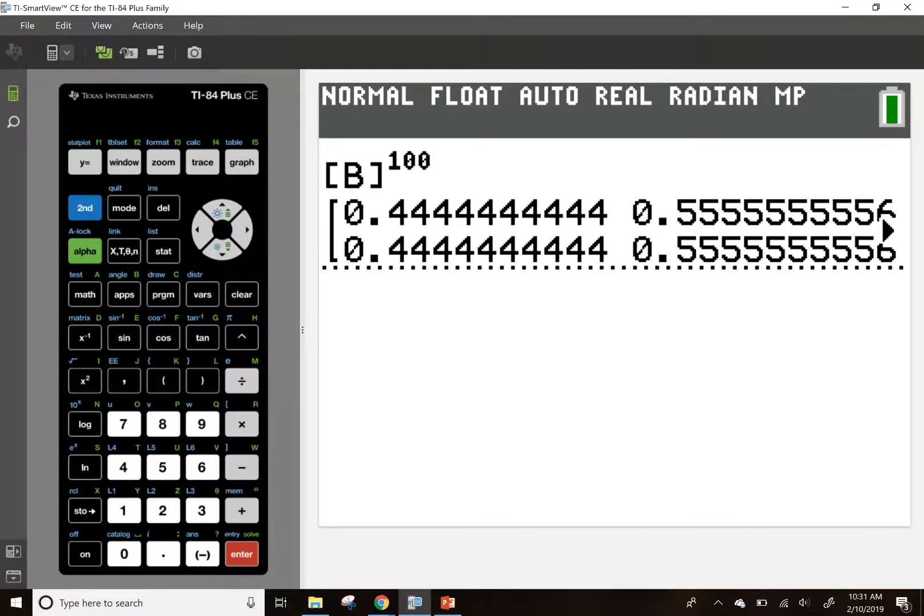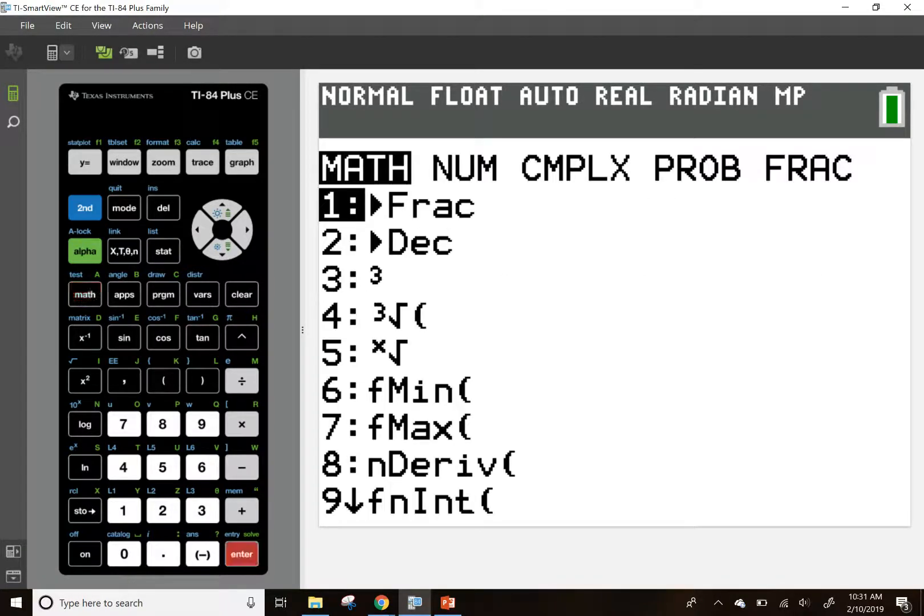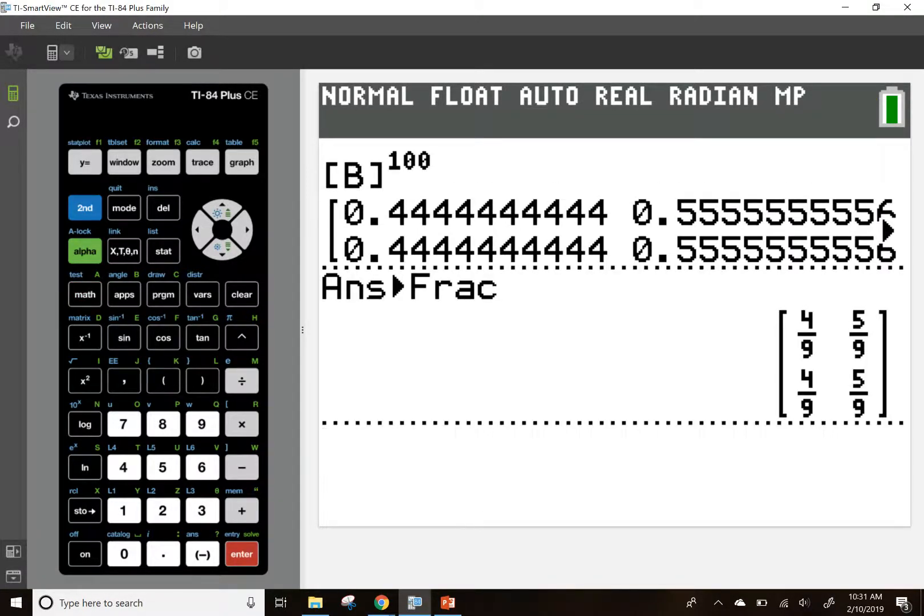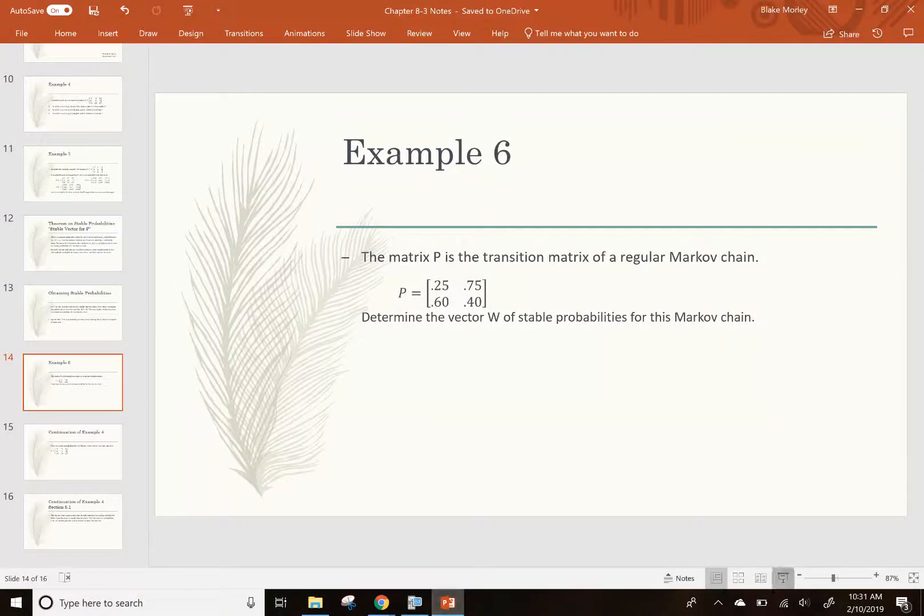Now, you can see that the first row, 0.444, 0.555, it's the exact same thing as the second row, 0.444, 0.555. I'm going to hit the math, enter, enter key so I can see this as fractions. And you can see that my top row and my bottom row are identical, 4/9s, 5/9s. That is going to be my stable vector.